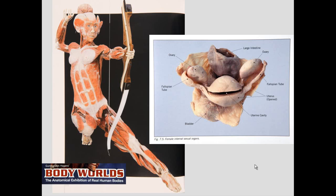This is a conference on female reproduction. Here we see the reproductive organs of the female. We see the ovary, the uterus, and the fallopian tube going from around the ovary over into the uterus. There's also the urinary bladder.